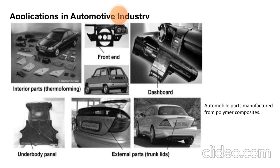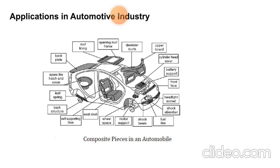Diagrams show the applications of composites in automobile interior and exterior parts, including the front end, dashboard, and underbody panels. Additional components include backplate, roof lining, open roof frame, demister ducts, upper bolt cylinder, load cover, battery support, front fascia, headlight socket, shock absorber, fuel line, shock beam, motor support, wheel space, seat shell, seat supporting floor, back structure, leaf spring, spare liner, hatch and cover. These are the composites used in automobile car manufacturing.